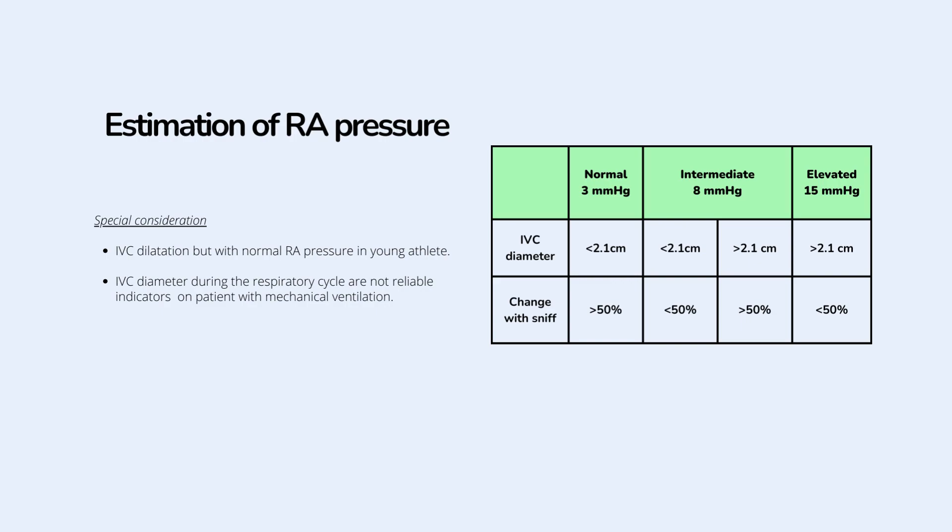On the other hand, having a diameter greater than 2.1 cm with less than 50% inspiratory collapse will have an estimated pressure of 15 mmHg. Other conditions that fall in between will have an intermediate RA pressure estimate of 8 mmHg.